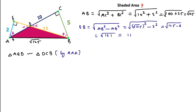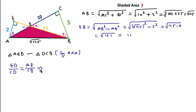Using similar triangle properties, the side opposite to beta in triangle AED is ED, and the side opposite to beta in triangle DCB is CD. The side opposite to alpha in triangle AED is AE, and opposite to alpha in triangle DCB is CB. So we can write ED/CD = AE/CB = 2/5. This will be our required equation.